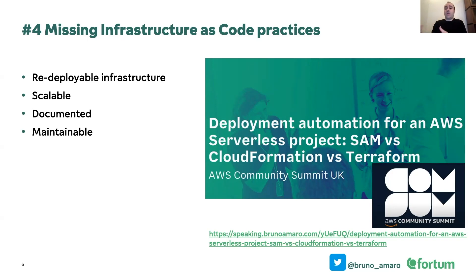Infrastructure as code allows you to write your entire AWS resources as code, so you can redeploy them as many times as you want. It allows for better scalability. It's also a way to actually document what happens — you can retrace steps, go to Git, and see who changed a resource and when. That helps a lot to self-document the code, making things a lot more maintainable.